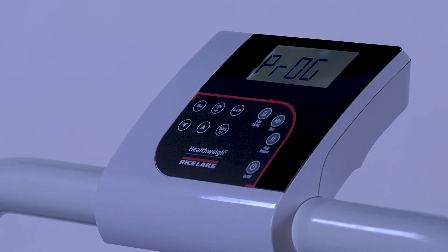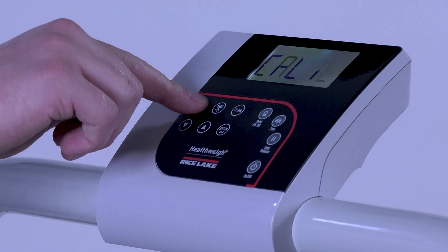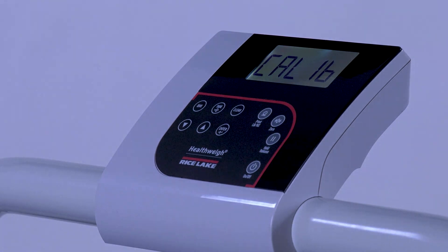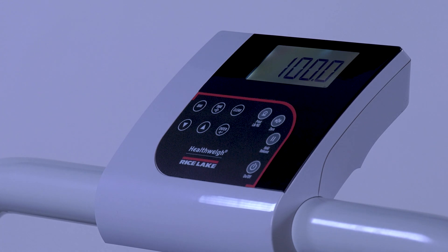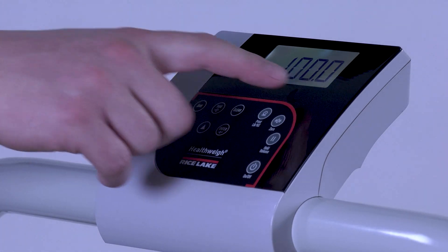The word PROG will appear on the display. Press the BMI key once, Calib will appear, then press Enter. A number will appear representing the amount of weight used for calibration. The pound symbol, LB, will be flashing.